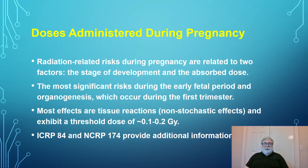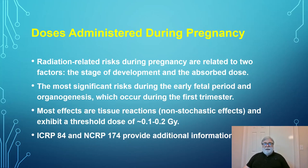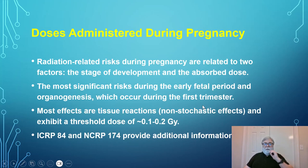Tissue reactions all have a threshold of about 100 to 200 milligray — that's 10 to 20 rem — which is higher than doses typically associated with diagnostic exams. References providing information about risks during pregnancy include ICRP Report 84 and NCRP Report 174, both available online and recommended for practitioners encountering this situation.